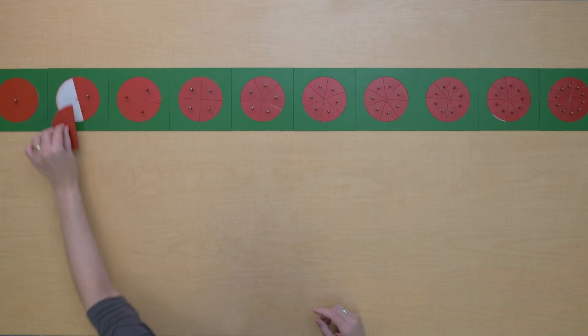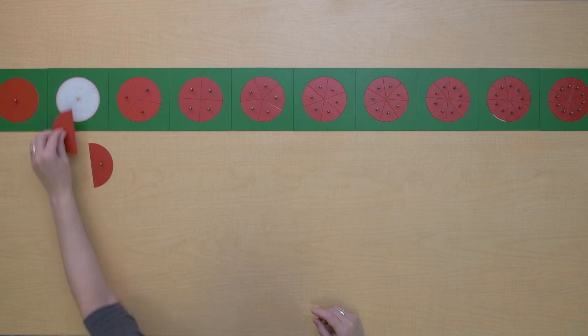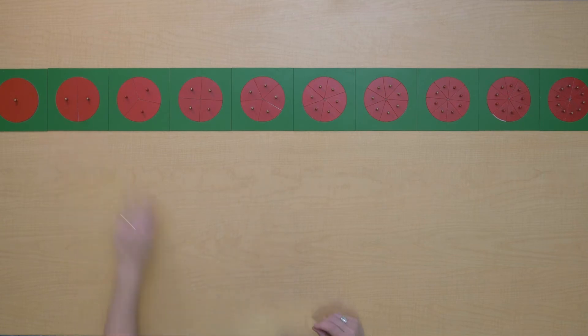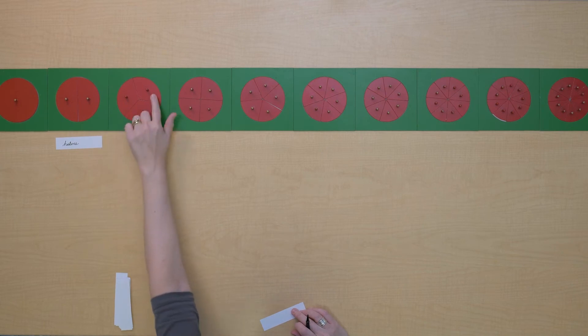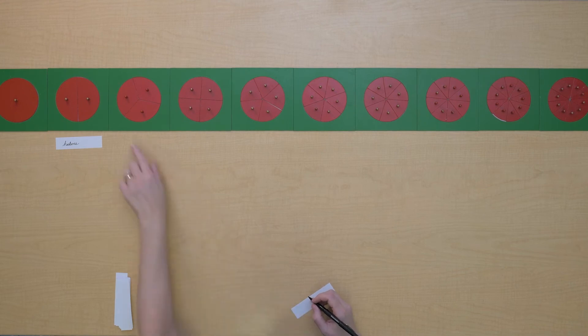So this fraction unit has two pieces and we call these fractions halves. This fraction has three pieces. We call this set of fractions thirds.